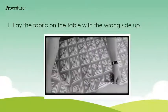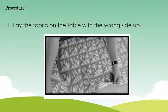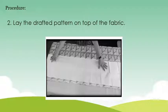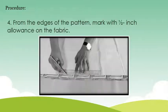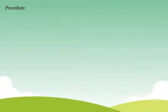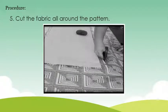Procedure. Number one: lay the fabric on the table with the wrong side up. Number two: lay the drafted pattern on top of the fabric. Number three: pin the pattern on the fabric to keep in place. Number four: from the edges of the pattern, mark with one-half inch allowance on the fabric. Number five: cut the fabric all around the pattern.